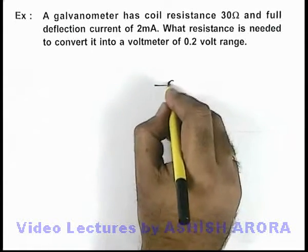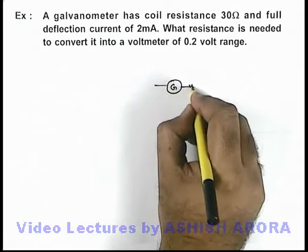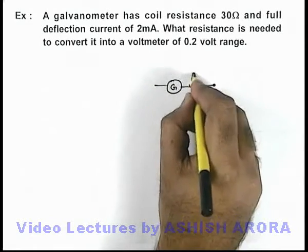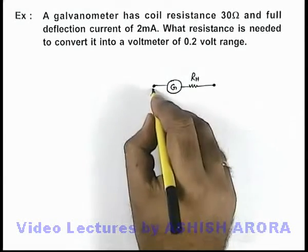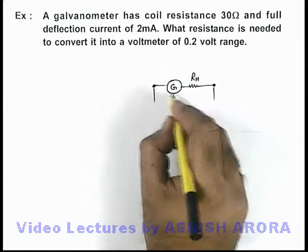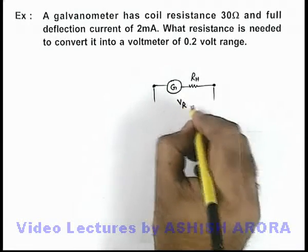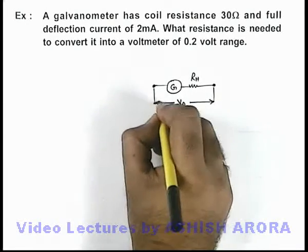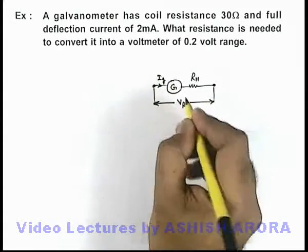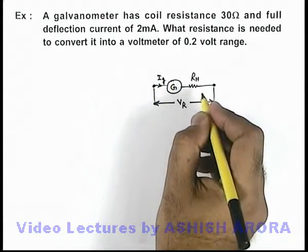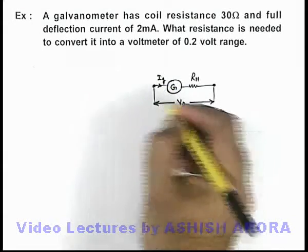Now, if we are given a galvanometer, we know that to convert it into a voltmeter we need to connect a high resistance in series with it, such that when across the terminals of this galvanometer a potential difference of range V_r is applied, a current i_g flows through it and it gives full deflection. That means it will now act like a voltmeter of range V_r.